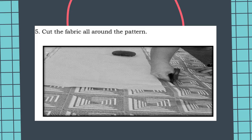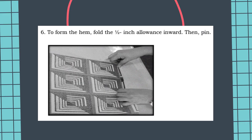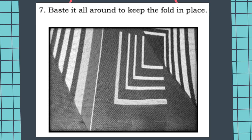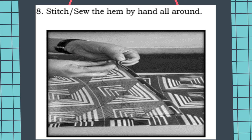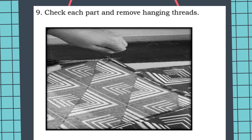Step 6: to form the hem, fold the 1.5 inch allowance inwards, then pin it. Step 7: after forming the hem, baste it all around to keep the fold in place using the basting stitch. Step 8: stitch or sew the hem by hand all around. Step 9: check each part and remove hanging threads. Finally, iron the fabric to flatten the whole piece.